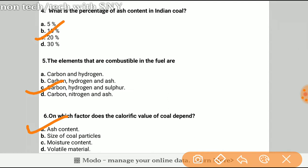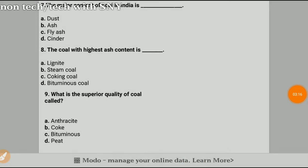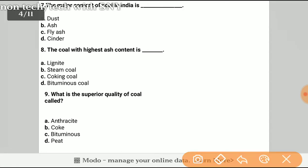The seventh question is: The major content of coal in India is? The answer will be B, ash. The coal with highest ash content is? The answer will be lignite.